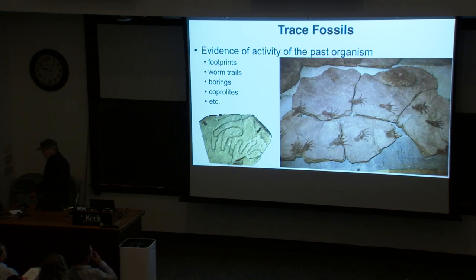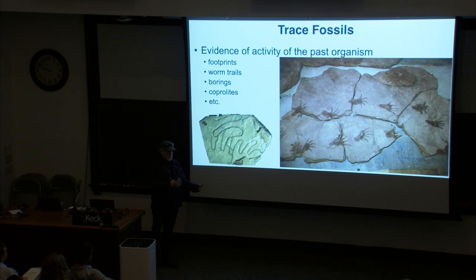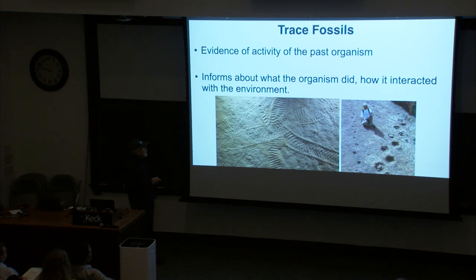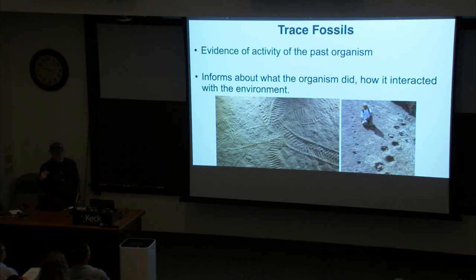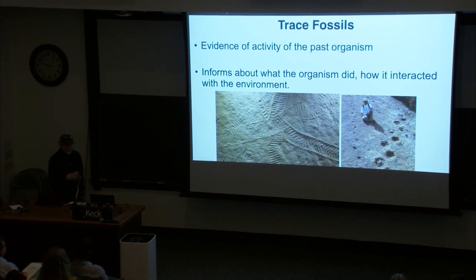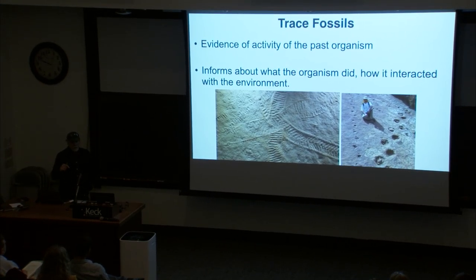Trace fossils are evidence of the activity of a past organism — the classic example would be a footprint or a worm trail, where it's not the actual body of the past organism itself, but evidence of its activity. I like to separate what does the body look like from what does the trace look like, because there are two ways to approach looking for ancient life. The trace fossil informs what the organism did and how it interacted with the environment. It's one thing to look for the body; it's another to look for evidence of activity. You might not have the body anymore. I'm coming from life that's already dead and in rocks, but I think it has relevance for looking for extant life or the activity of extant life.